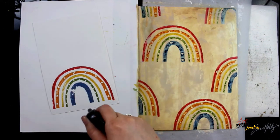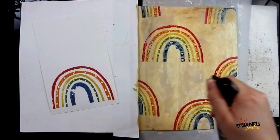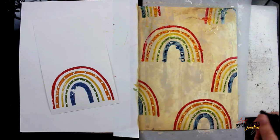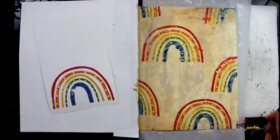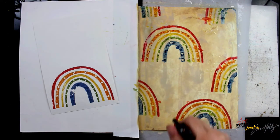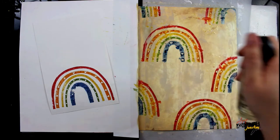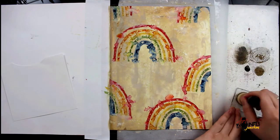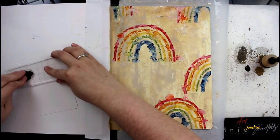Because these are distress inks, they do react with water. I'm using my distress sprayer to just sprinkle little bits of water all randomly all over these rainbows so that the water starts to move the ink a little bit and I get some color splotches. It makes it be not quite so perfect, a little bit more vintagey.